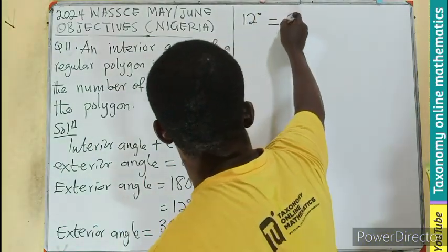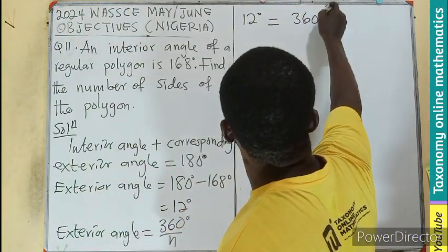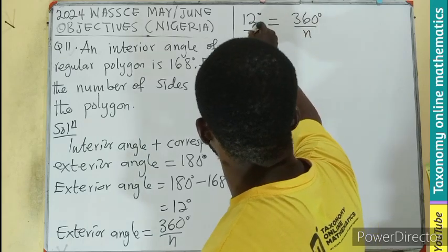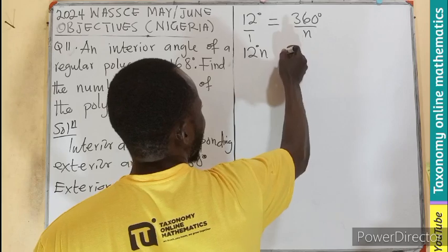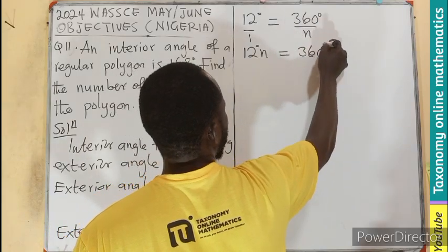If you cross multiply, you have 12n equals 360.